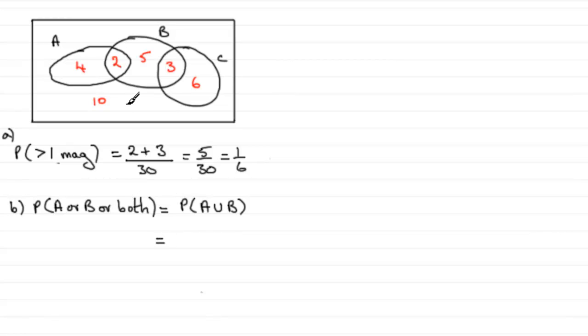But what is it going to be? Well, here would be A, four and two. This is both. And B would be five and the three. Even though three is in the C, it doesn't matter. A union B would be the four, two, five and three. So what I'd have is four plus two plus five plus three. All divided by thirty.